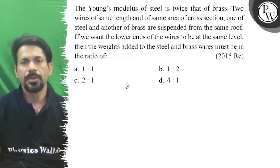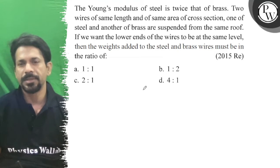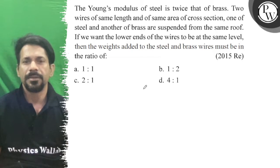Hello, let's see the question. The Young's modulus of steel is twice that of brass. Two wires of same length and same area of cross section, one of steel and another of brass, are suspended from the same roof. If you want the lower ends of the wires to be at the same level, then the weights added to the steel and brass wires must be in the ratio of...